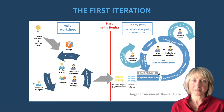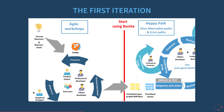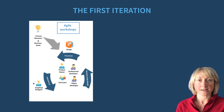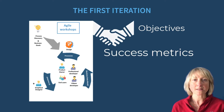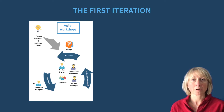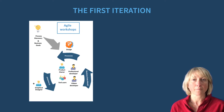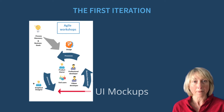Here we focus on the first iteration. We recommend organizing workshops including the technical team, the product owner, and the end users prior to the implementation in Bonita Studio. It is important to reach an agreement on objectives, success metrics, and key points with the users. The results of those workshops are macro designs of processes, identification of the business data model, and first mock-ups of the user interfaces you want to implement.